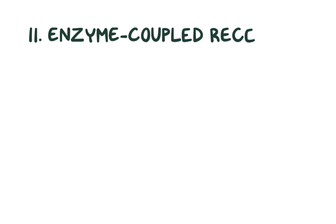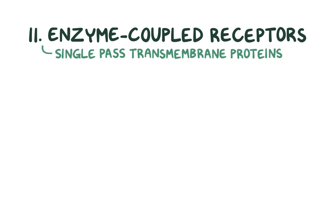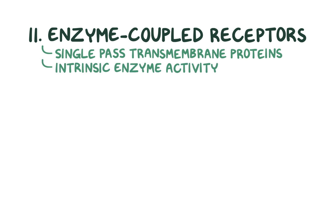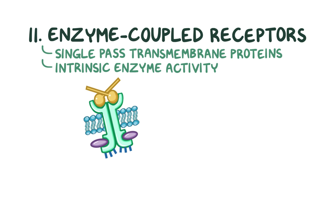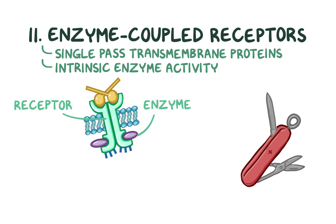Next are the enzyme-coupled receptors. They're usually single-pass transmembrane proteins, meaning they have only one transmembrane segment, and their intracellular end has intrinsic enzyme activity. Enzyme-coupled receptors have two parts: one domain is the receptor and the other is an enzyme — like a Swiss army knife composed of both a knife and scissors. The enzymatic domain is usually a protein kinase that phosphorylates the receptor domain.